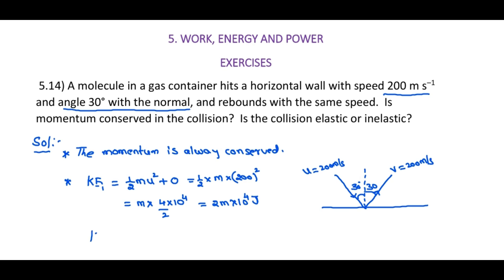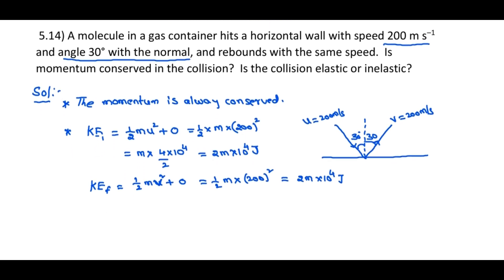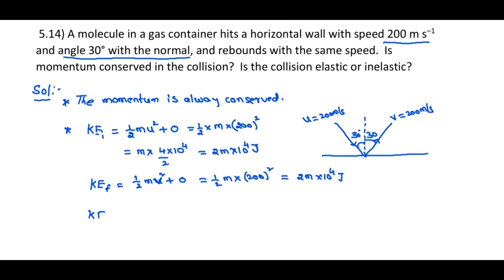The final kinetic energy is equal to half m v squared plus 0. Here also half m into 200 squared, which also gives 2m into 10 to the power 4 Joules. Since the initial kinetic energy before the collision equals the final kinetic energy after the collision, therefore the collision is elastic.